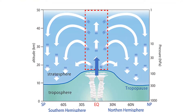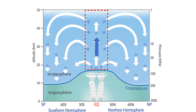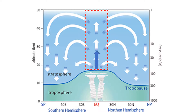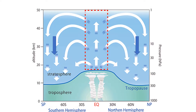In the stratosphere, there is an overturning circulation which causes air to rise in the tropics, travel towards the poles, and then descend at the poles. Due to this circulation, CFCs enter the stratosphere in the tropics, where they are transported upwards and exposed to UV radiation, which breaks them down and forms free radicals.